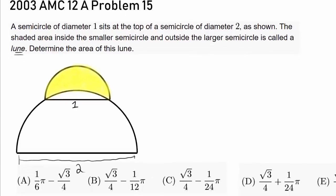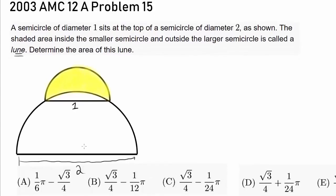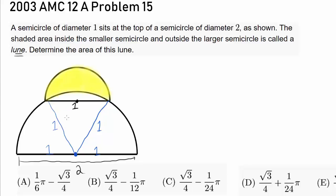To find the shaded area, let's first identify the centers. We know that's the center of the smaller semicircle and this is the center of the larger semicircle. Because the radius of the larger semicircle is 1, and we're given that this diameter length is 1, we have an equilateral triangle with a known side length, which means we can find its area.